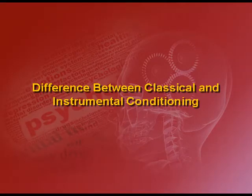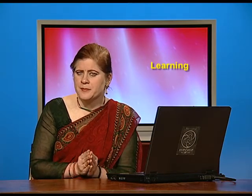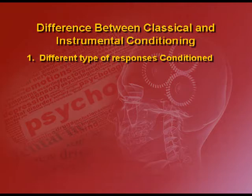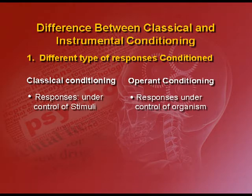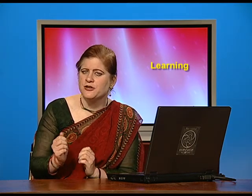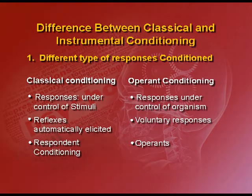Is there a difference between classical conditioning — the Pavlovian conditioning — and Skinnerian or instrumental conditioning? Of course, there are many differences. The first difference is in the type of responses conditioned. In classical conditioning, responses are under control of stimuli — they are reflexes which are automatically elicited, hence it is also known as respondent conditioning. However, in operant conditioning, responses are under the control of the organism — they are voluntary responses. The organism knows it has to conduct a certain behaviour, and these are known as operants — they operate in the environment and the organism is responsible for conducting them.